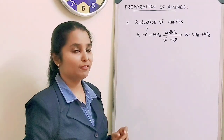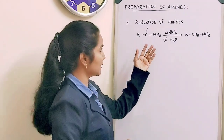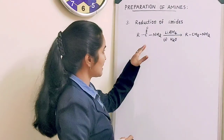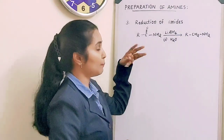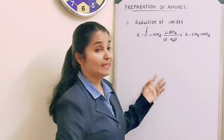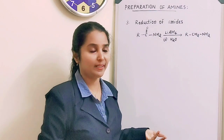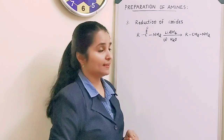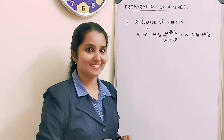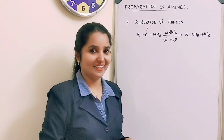The fourth method of preparation is reduction of amides. When an amide is reduced by lithium aluminium hydride (LiAlH₄), you get the corresponding amine. Very simple.